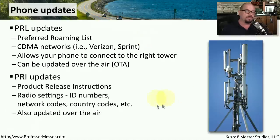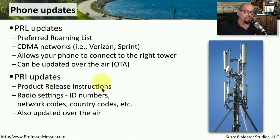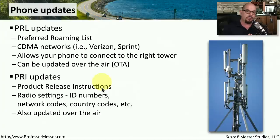Another set of updates you might receive are PRI updates — these are product release instructions. These have specific radio settings like ID numbers, network codes, and country codes, so that your phone knows exactly how to use the wireless network. These are also updated over the air, so you may never know that a PRI update has occurred.